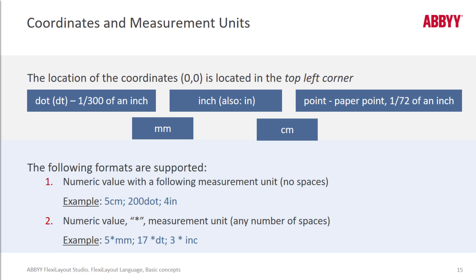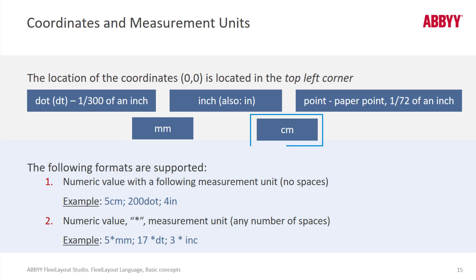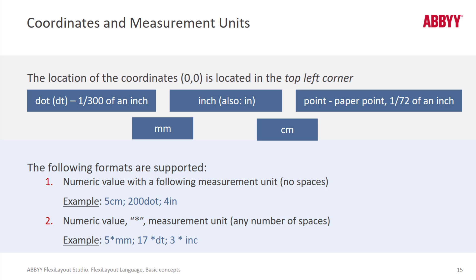We are using a language that's very geometrical in nature. We're defining areas and defining rectangles, and we need to specify measurement units. By default, our measurement units in FlexiLayout Studio are dots, but you still need to specify DOT or DT in your code. You can also use millimeters, centimeters, inches, and points. You can also use a dimension based on the size of an already found element.